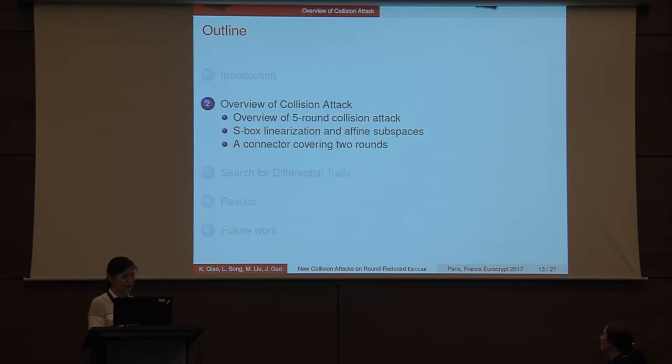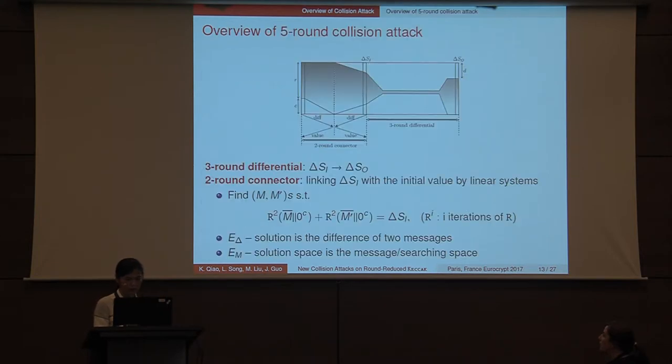Now let's move on to the overview of the collision attack, including the strategy of S-box linearization and how it can be used to build a connector covering two rounds. The five-round collision attack is divided to a three-round differential that covers the last three rounds and a two-round connector that links the input difference of the differential with the initial value.